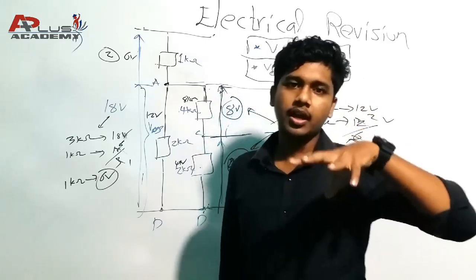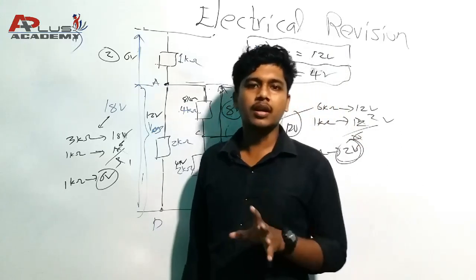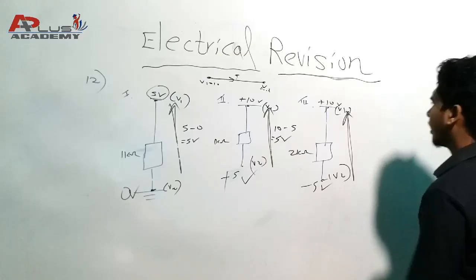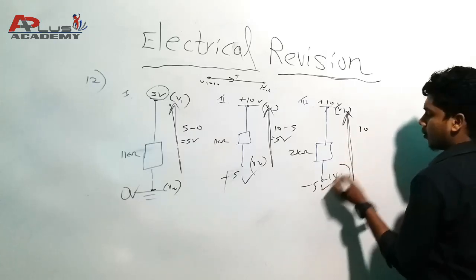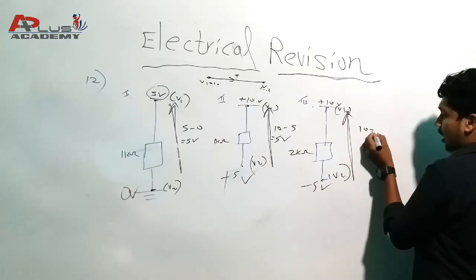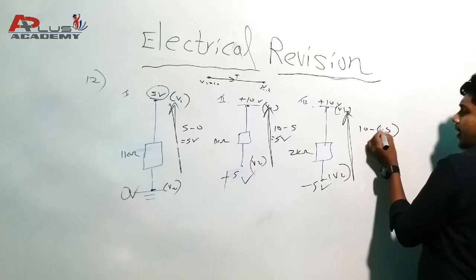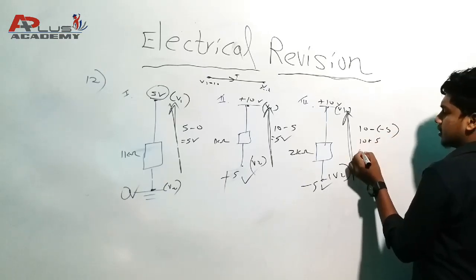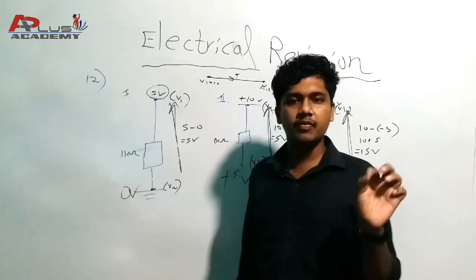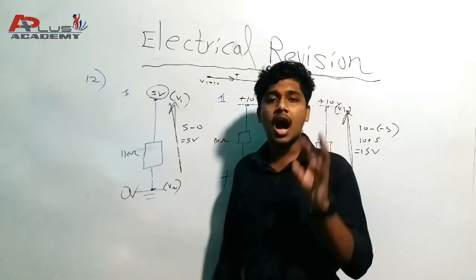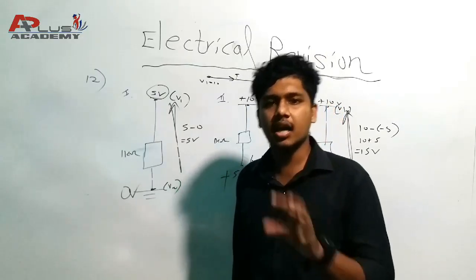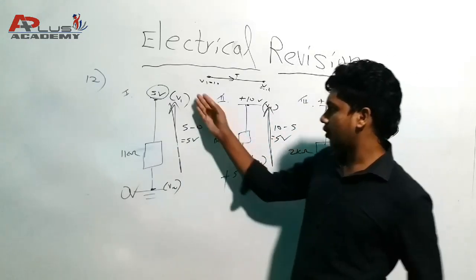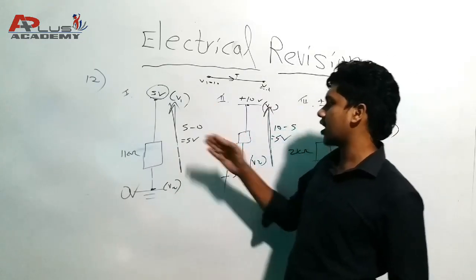We will learn more about this. Now, the power voltage is 10 and the power voltage is minus 5. What is the power voltage? The power voltage is 5 and the power voltage is 0. You can write 5.